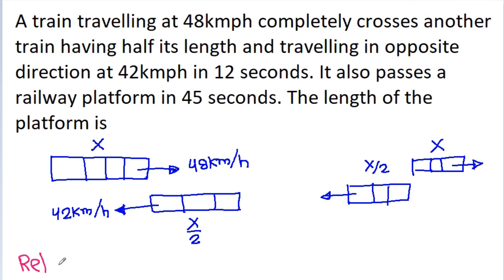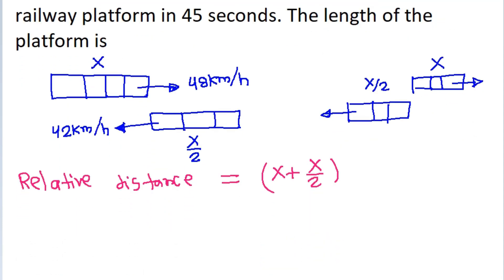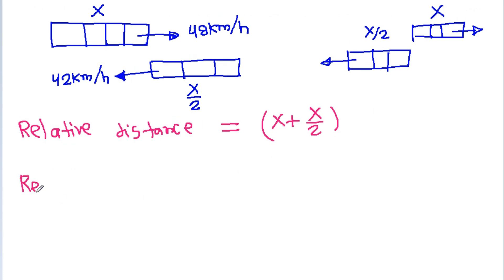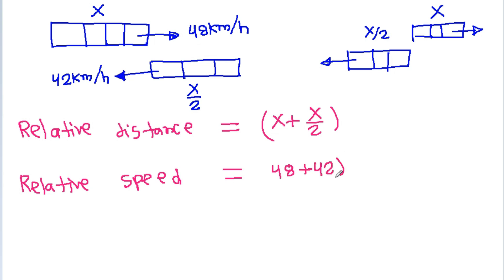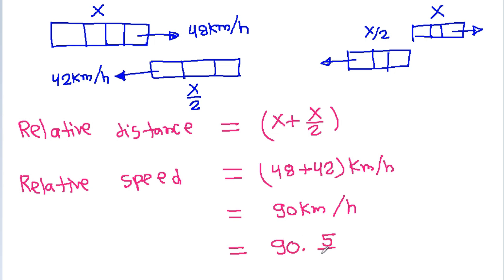The relative distance will be equal to x plus x by 2, and the relative speed will be equal to 48 plus 42 km per hour, which is 90 km per hour, or 90 times 5 by 18 meter per second.